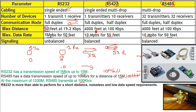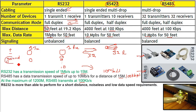RS-232 is unbalanced, while RS-422 and RS-485 are balanced. Balanced means you have a ground — plus, minus, and a ground. If you don't have a ground, it is unbalanced. RS-422 and RS-485 are balanced, providing better noise immunity.